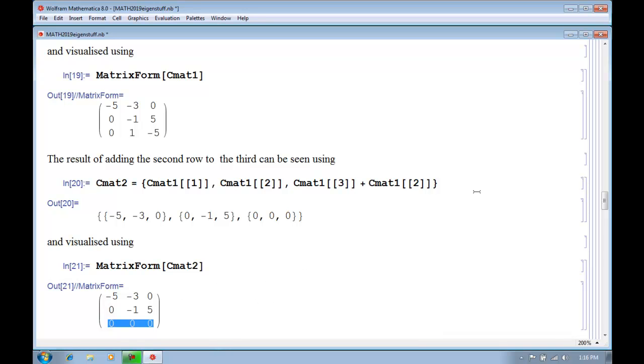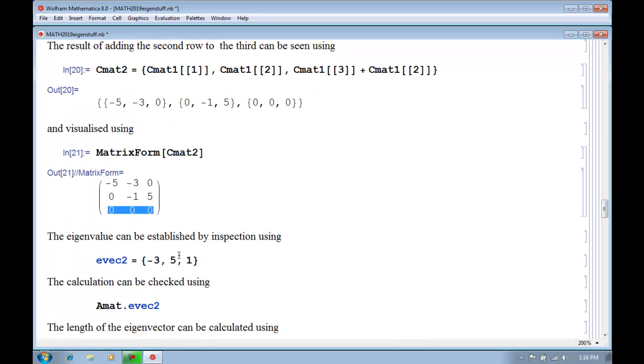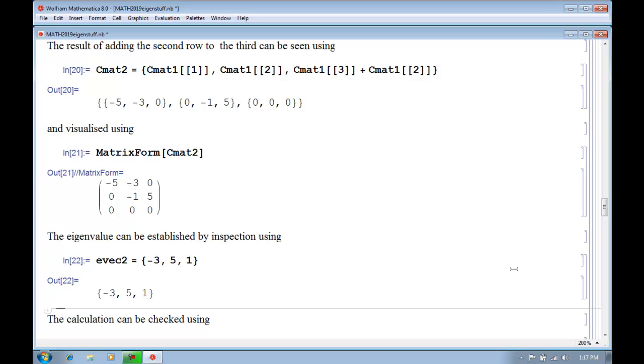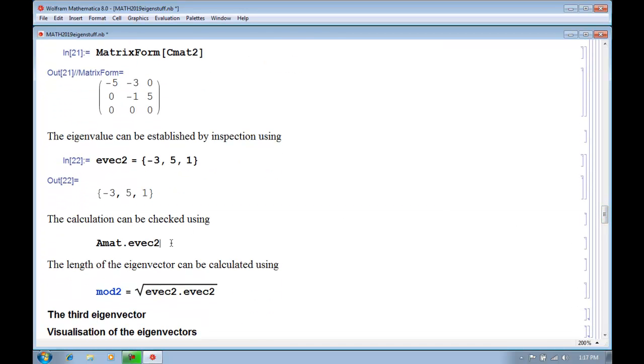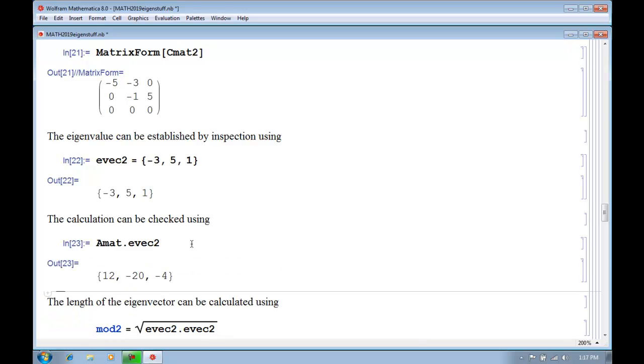So now we can write down the eigenvector. We can choose the first or the last element to be 1 or any value we like. And then we can see that the second element will be 5 times that. So that will be 5. And then the first element will be minus 3. So we'll write that down and check that by taking the scalar product. And we can see that this vector is minus 4 times this vector. So it is indeed an eigenvector.